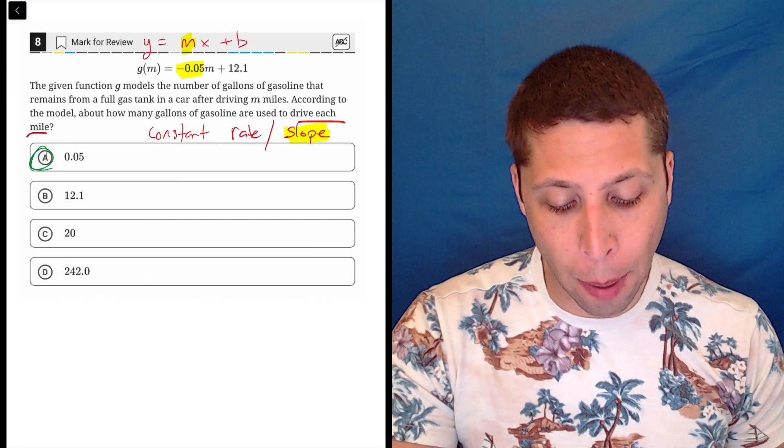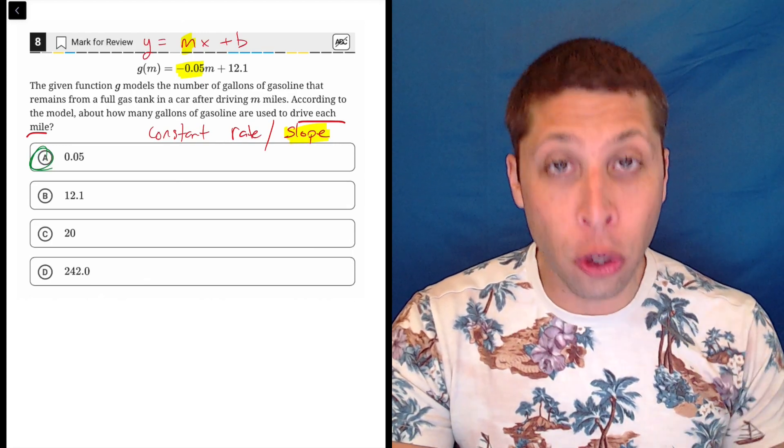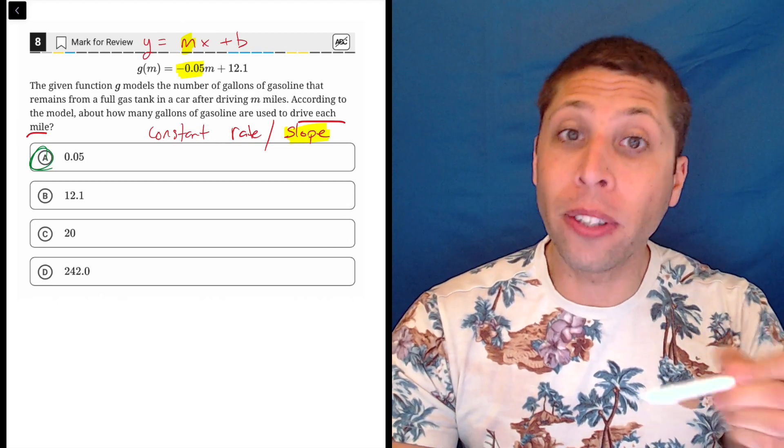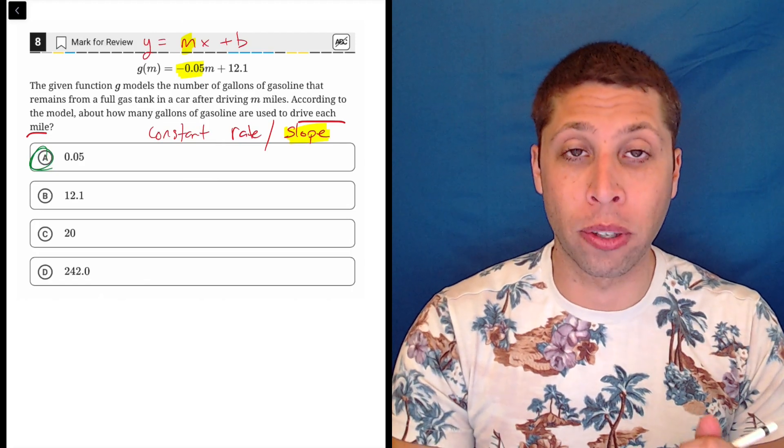According to the model about how many gallons of gasoline are used to drive each mile. So that used is the negative. So they're building the negative into the question so that they can remove it from the answer choices.